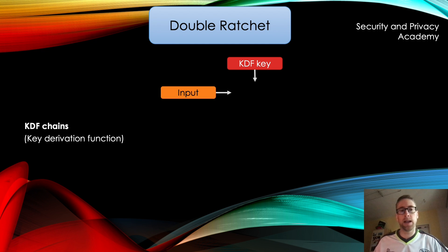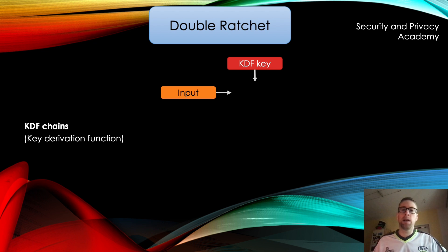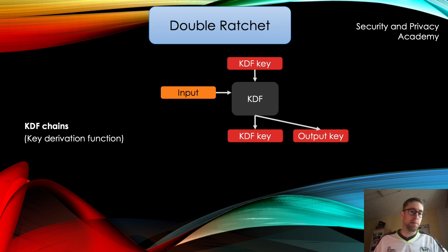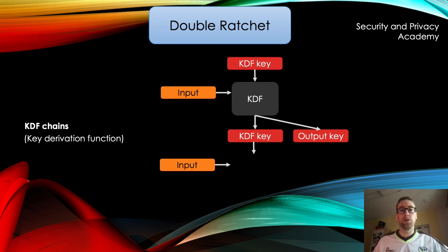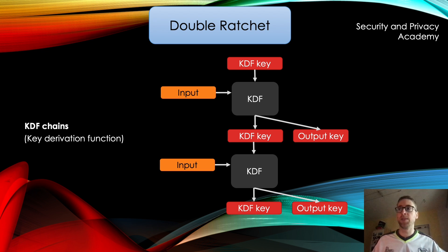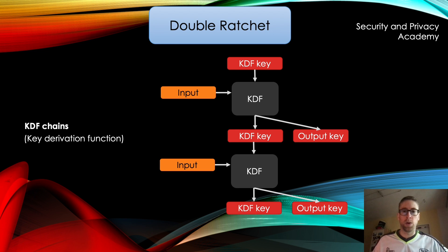How do KDF chains work? KDF chains work by having a secure and random KDF key and some additional input. These parameters are fed into the KDF, which outputs a seemingly random key. This key is then split into another KDF key and an output key that can be used for encryption. The resulting KDF key can be used together with another input for the next KDF round to generate another KDF and output key. This is hence the name KDF chain — because it is a chain of KDFs that are iteratively built up on each other, and this process is repeated for every message sent.